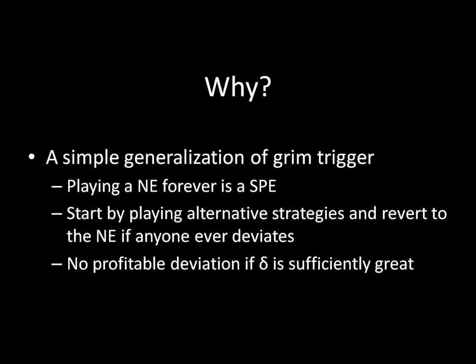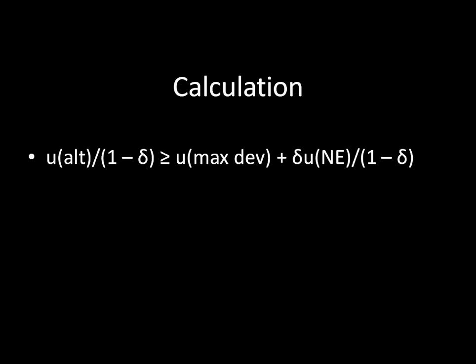So when you're playing these strategies, you start out by selecting the alternative strategy set — not the Nash Equilibrium set — and then you revert back to the punishment phase, which is the Nash Equilibrium of the game in every stage, if anyone ever deviates. Think about the utility for the alternative set of strategies for a particular individual. If we follow the alternative set of strategies in every single period, the sum utility for the player is going to be the utility for that alternative set of strategies divided by one minus the discount factor — that's like getting that payoff today, tomorrow, the day after, forever.